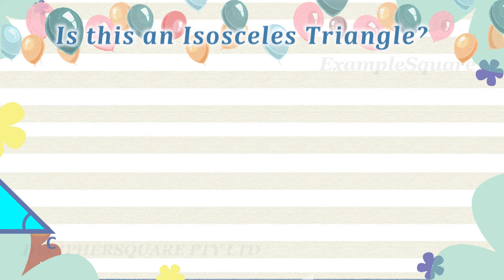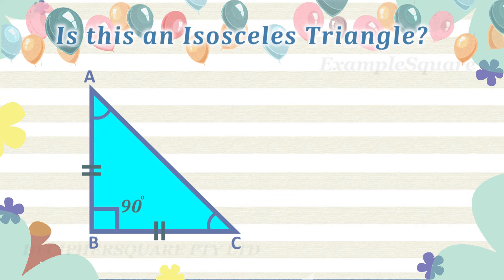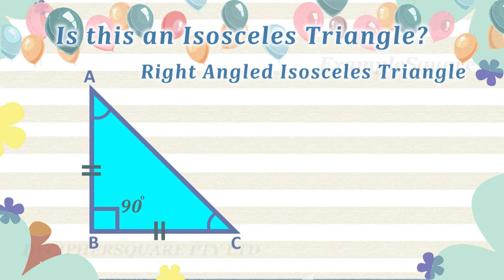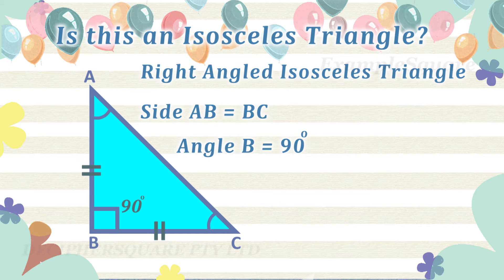Is this an isosceles triangle? Yes, this is an isosceles triangle. This is a special type of isosceles triangle as it has two equal sides and also one of its angles is a right angle, that is a 90 degree angle.